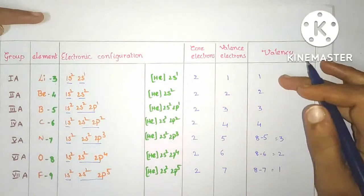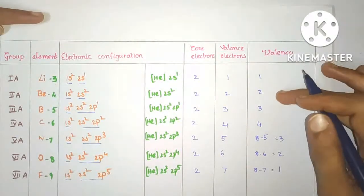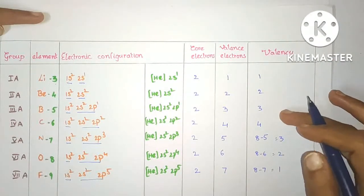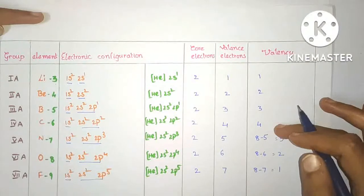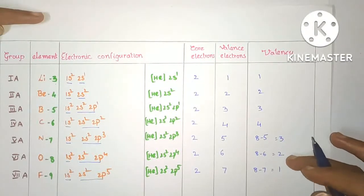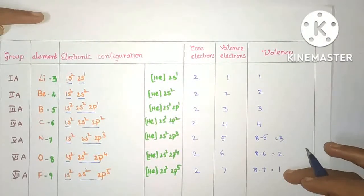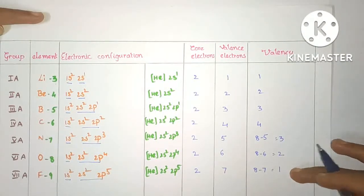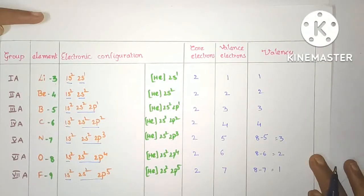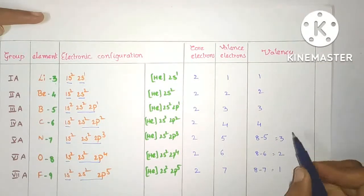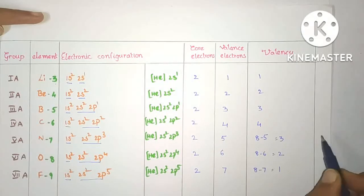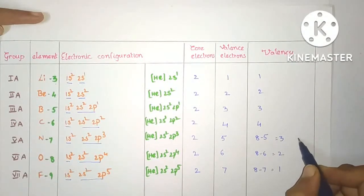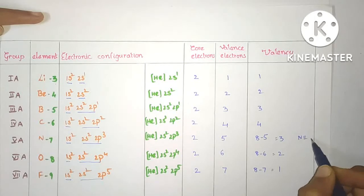So the valency for lithium is 1, beryllium 2, boron 3, carbon 4, nitrogen 3, oxygen 2, and fluorine 1. Valency is nothing but the combining capacity of an atom. For example, nitrogen has a valency of 3, which means nitrogen can form 3 bonds with another atom.